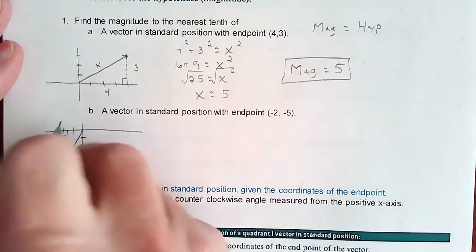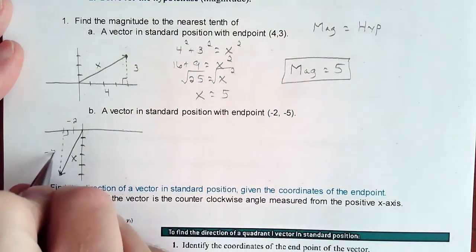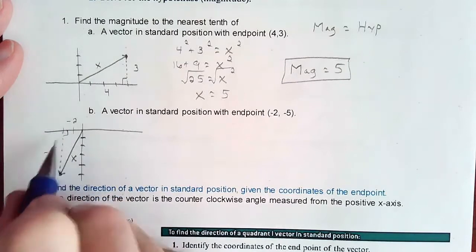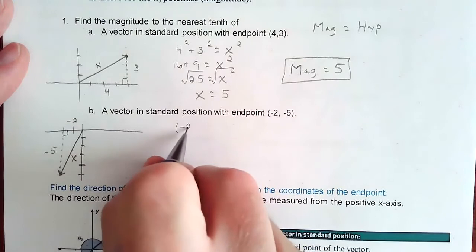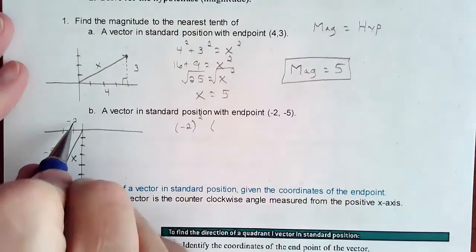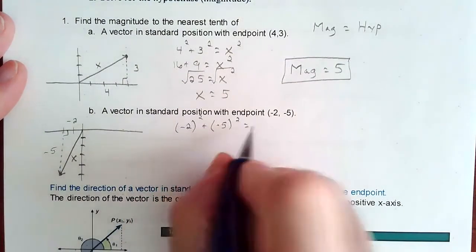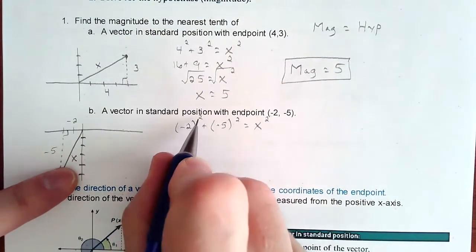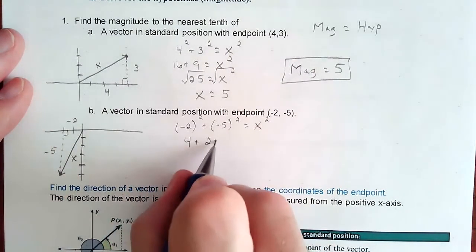In this world, we do want to have negatives on them. Pythagorean theorem won't matter, but when we try to find the angle measurement, the signs will matter. So if we do Pythagorean theorem, we're going to look at negative 2 squared plus negative 5 squared equals x squared. And why the negatives don't matter is because you're going to square them. So that's going to give you a positive 4. That's going to give you a positive 25.